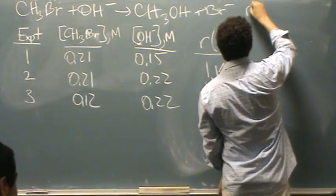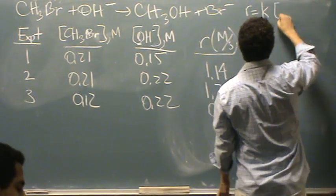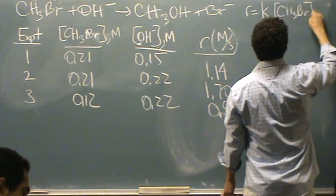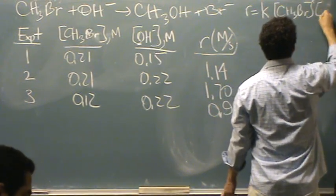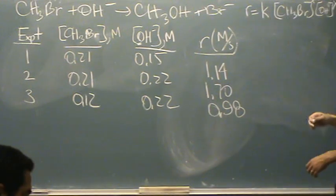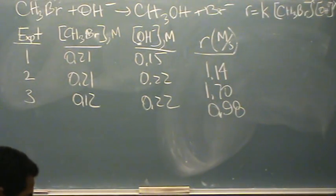So, your rate is equal to K times CH3Br to the X, and let's say OH to the Y. So I want to find K, X, and Y in this problem.